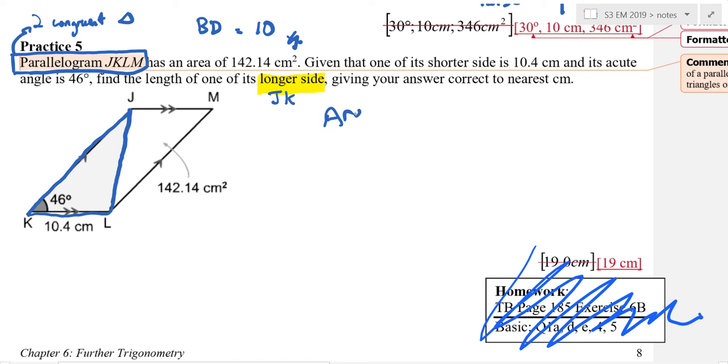So area of parallelogram is equal to 142.14. Do you know why? Yes. So two times area of triangle JKL will be equal to 142.14. Do you agree?